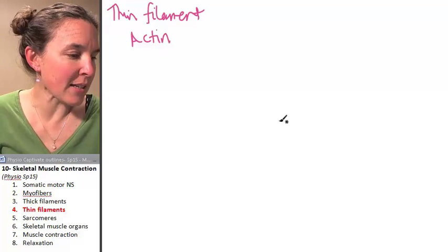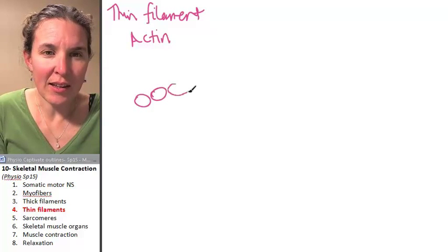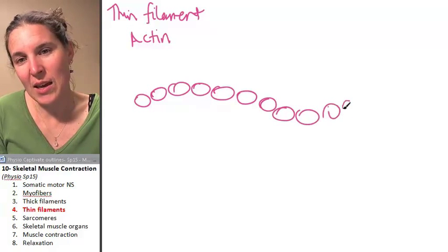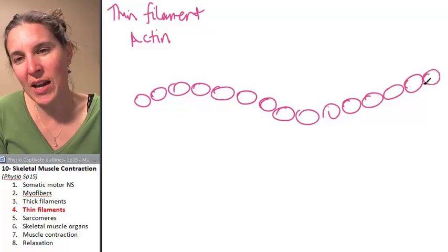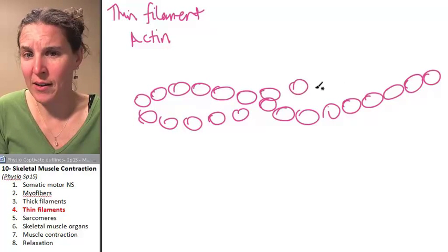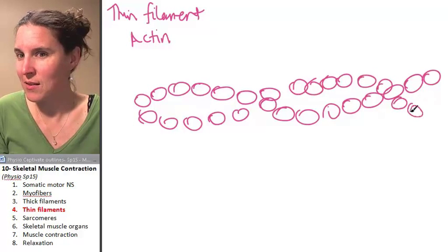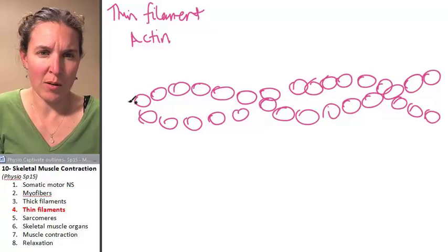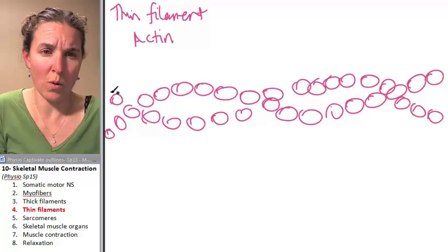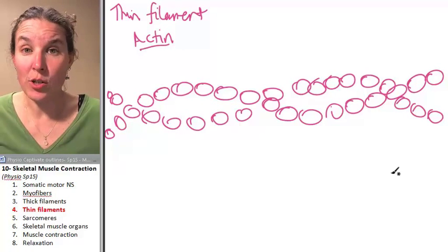And so if we were to look at actin, it actually kind of looks like this. It winds, there's actually like two strands of actin, and they wind around each other. Can you see how I'm trying to make them form like a double helix? Those are actin molecules. And they're just proteins.